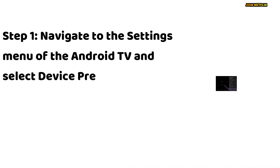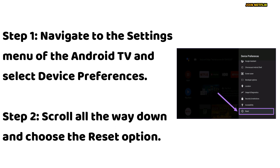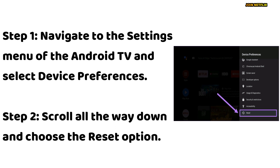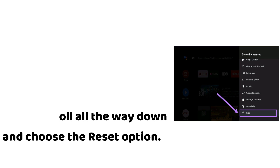Step 1: Navigate to the Settings menu of the Android TV and select Device Preferences. Step 2: Scroll all the way down and choose the Reset option.